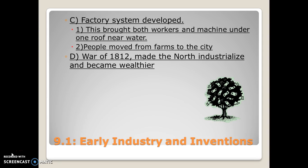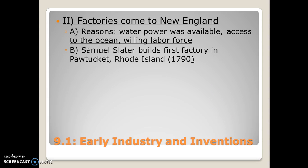People began to migrate out of farms to large cities because that's where the jobs are — you go where the jobs are located. Because of the factory system and the Industrial Revolution that began in Britain, and the War of 1812, the northern part of the United States industrialized and became wealthier faster than ever before. Factories came to New England because water power was available, they were close to rivers and the ocean, and there was a large immigrant labor force willing to work in cities and factories.